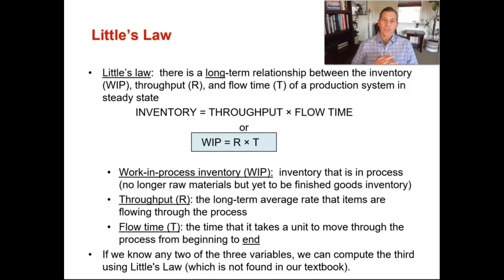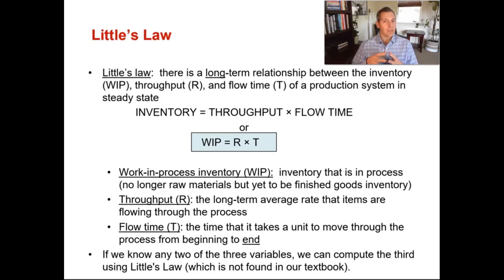Throughput is the long-term average rate that items are flowing through a process. Flow time is the time it takes to get a unit from the beginning to the end of a process — it's a lot like manufacturing cycle time, but for Little's Law it's called flow time. Again, if we know any two of these three variables, we can solve for the third.